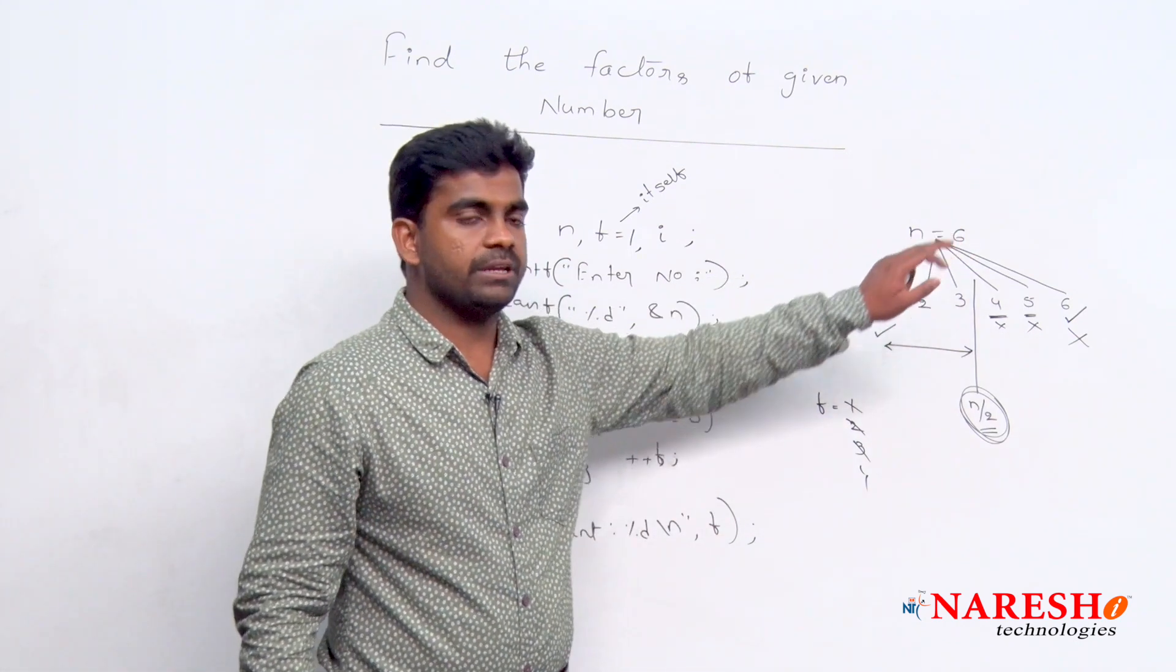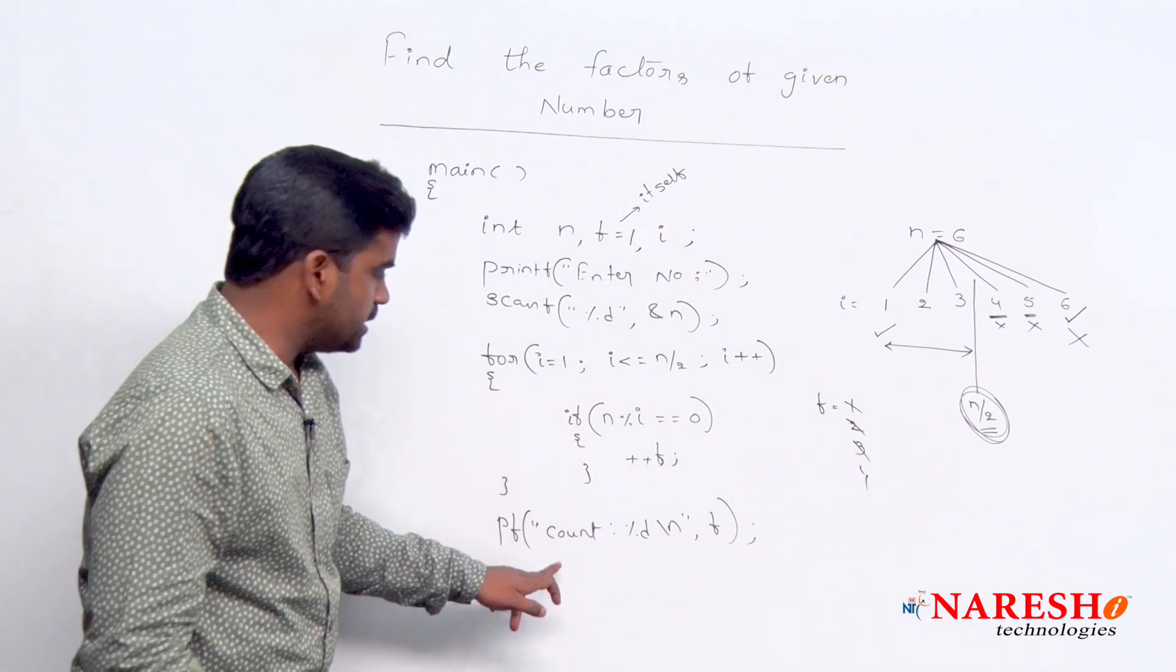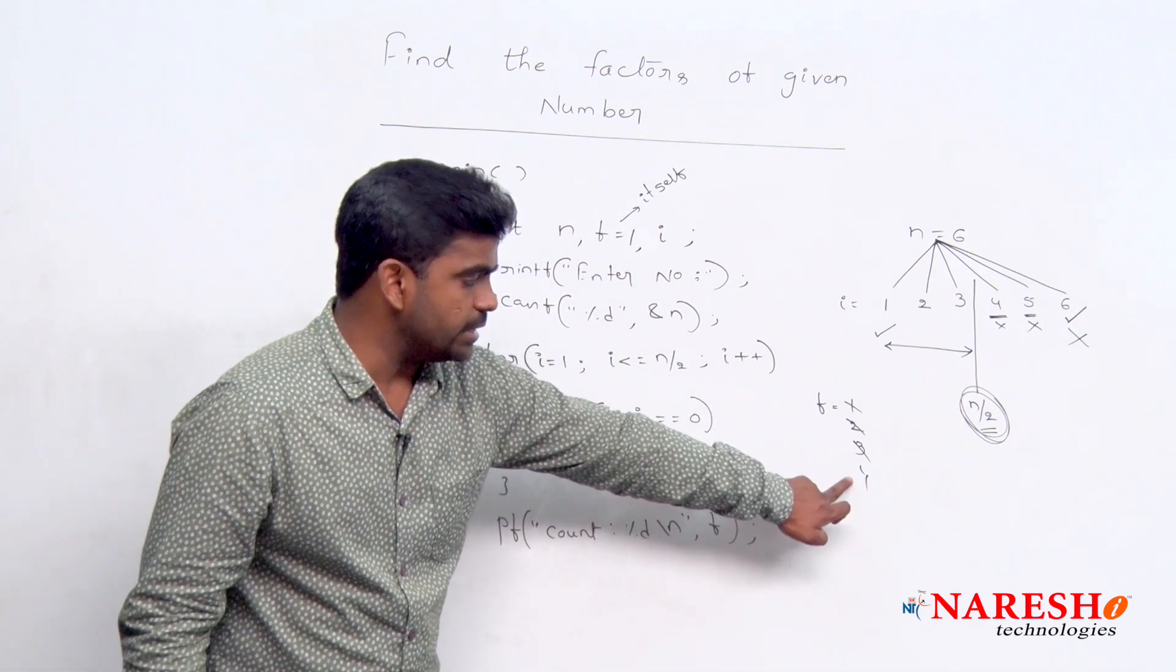If input is 6, how many factors? 1, 2, 3, 4. Four factors are there. Here the display will show that f value is 4.